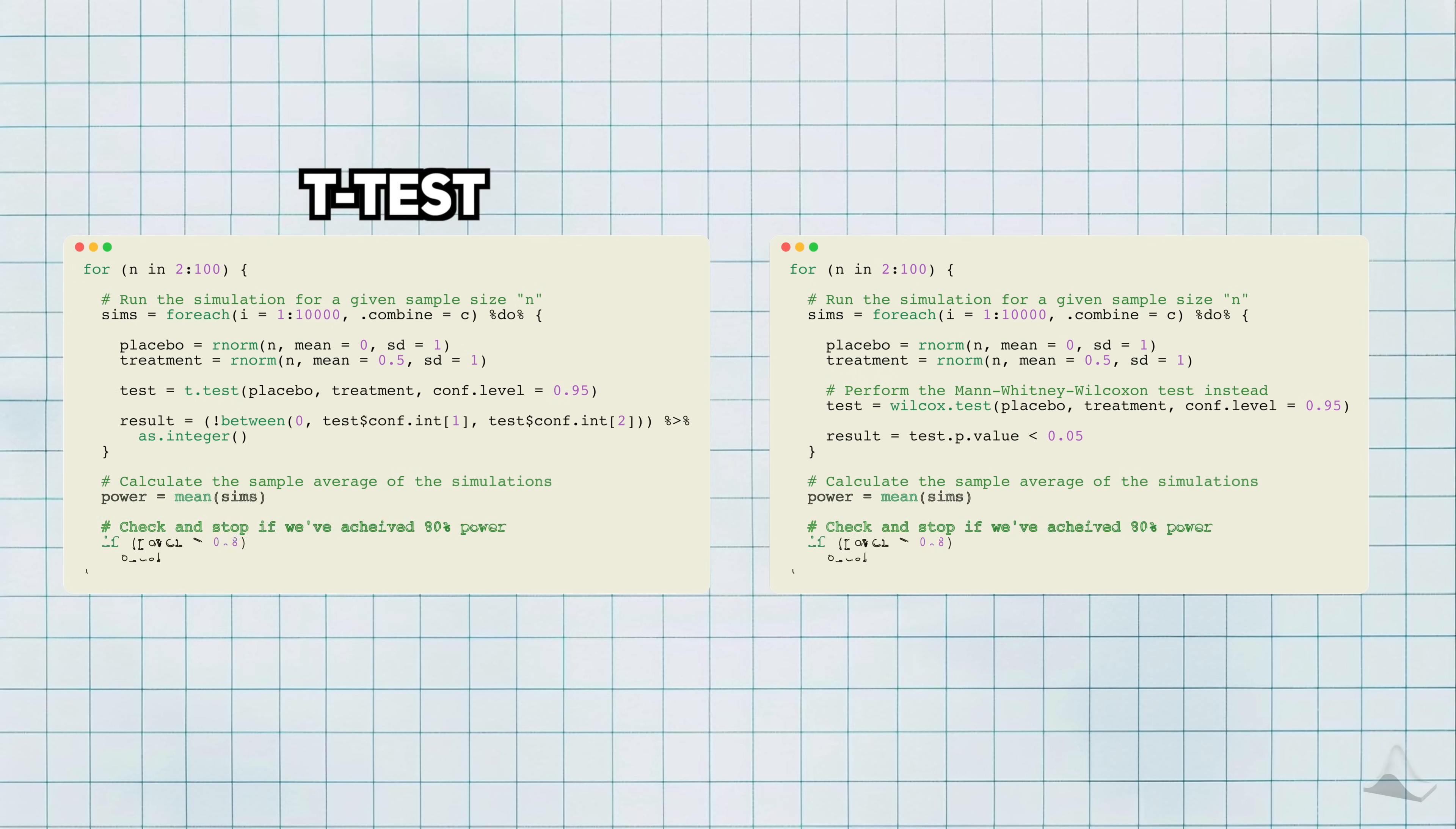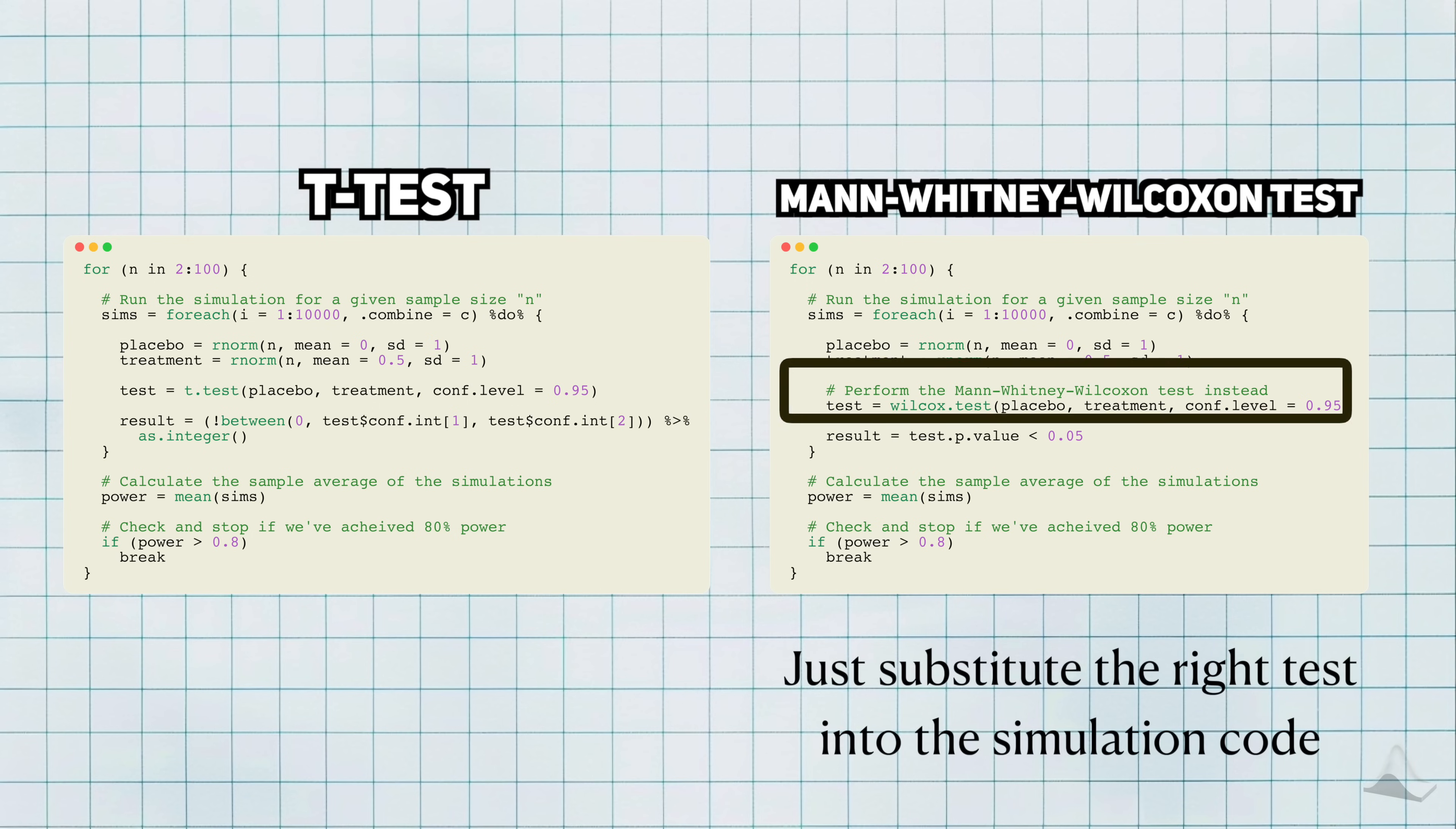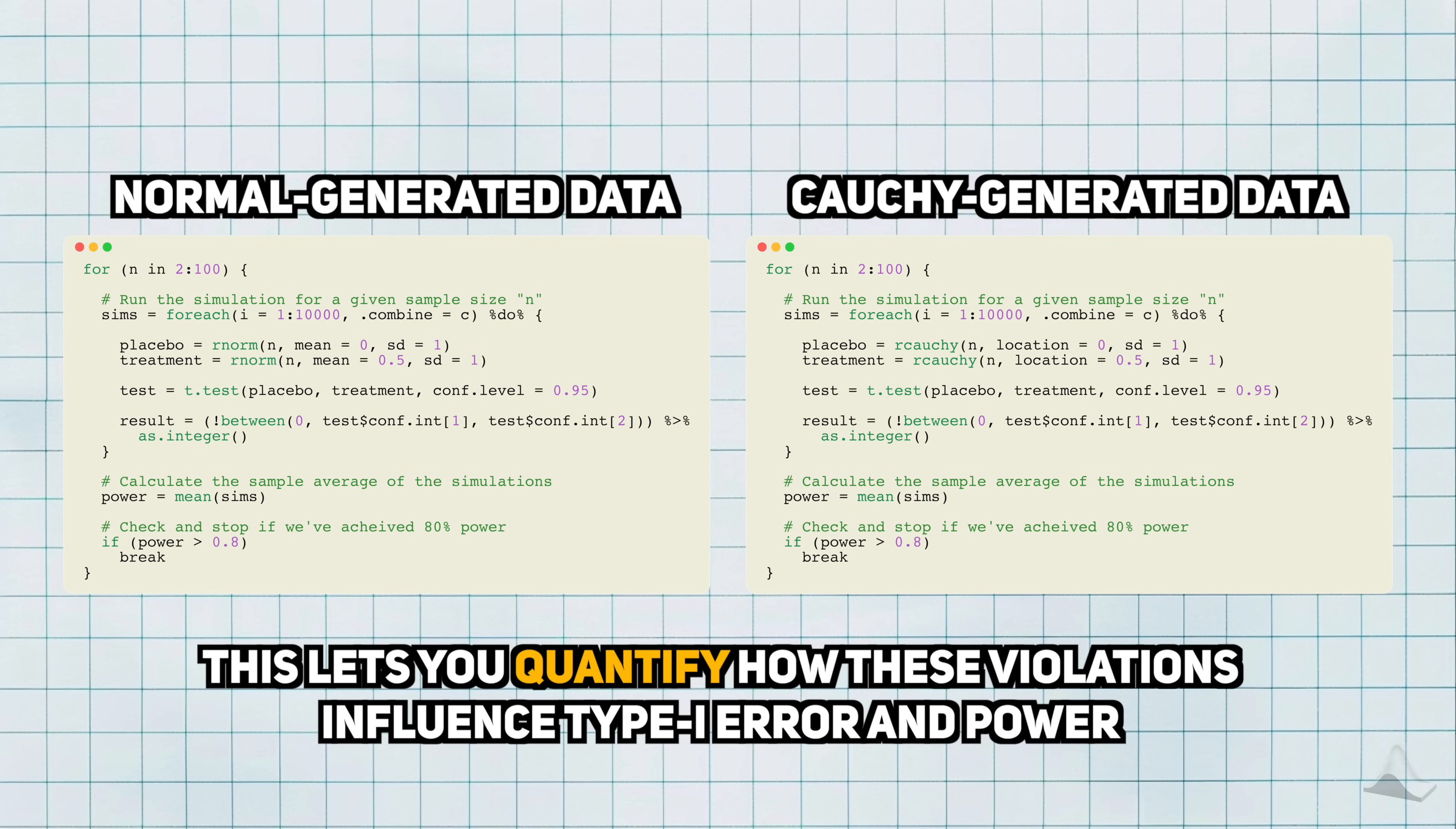For example, if you wanted to use the Mann-Whitney test, which is like a non-parametric analog to the two-sample t-test, all you need to do is place that in the code instead. Even more powerful, you could also generate data that violates the assumptions of your hypothesis test. Instead of using the normal distribution to generate the data, you could use a Cauchy distribution instead. Then, you can run the simulation study again and actually see and quantify how much this violation influences your type 1 error in power. And this is much more powerful than being cynical and crying, statistics is all lies, in the comments section.